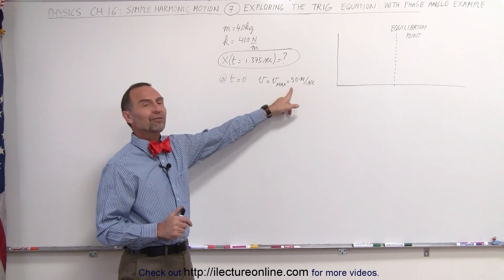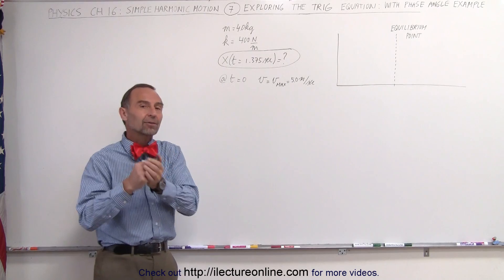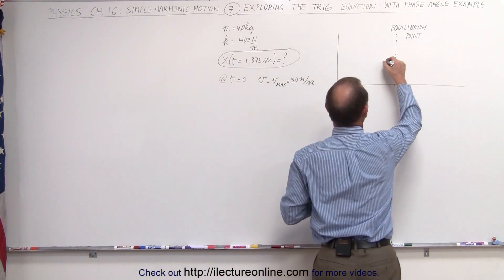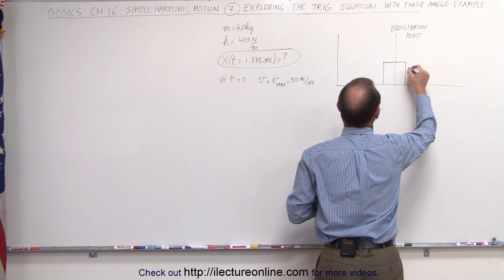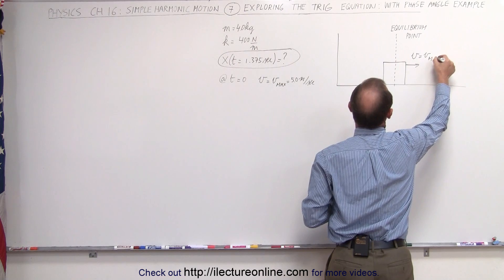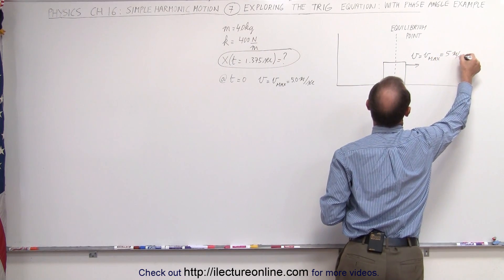Well, it's a positive five meters per second, and it's the maximum velocity that they can have, which means that the object must be at the equilibrium point. And the object must be moving to the right, v equals v max, which in this case is equal to five meters per second.